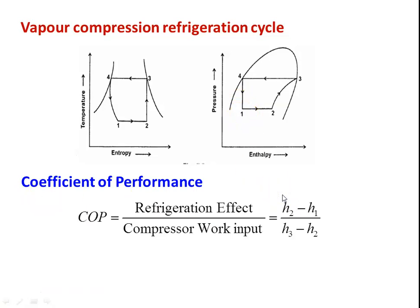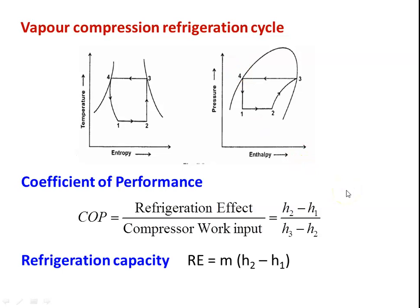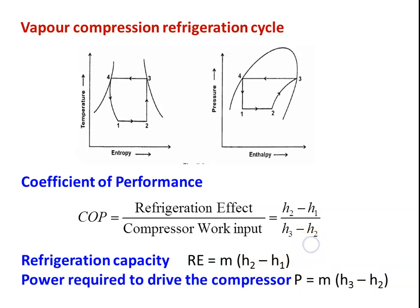The coefficient of performance, COP, equals refrigeration effect divided by the compressor work input. Refrigeration effect is the heat absorbed by the refrigerant in the evaporator, which is H2 minus H1. So, COP equals H2 minus H1 divided by H3 minus H2. In all problem solving, we take H4 equal to H1, since this is a constant enthalpy process. Refrigeration capacity is the amount of heat extracted in kilojoules per second — mass of the refrigerant multiplied by the enthalpy difference across the evaporator. Power required to drive the compressor is mass of the refrigerant multiplied by the enthalpy difference across the compressor. These are the three basic equations to solve the problem.